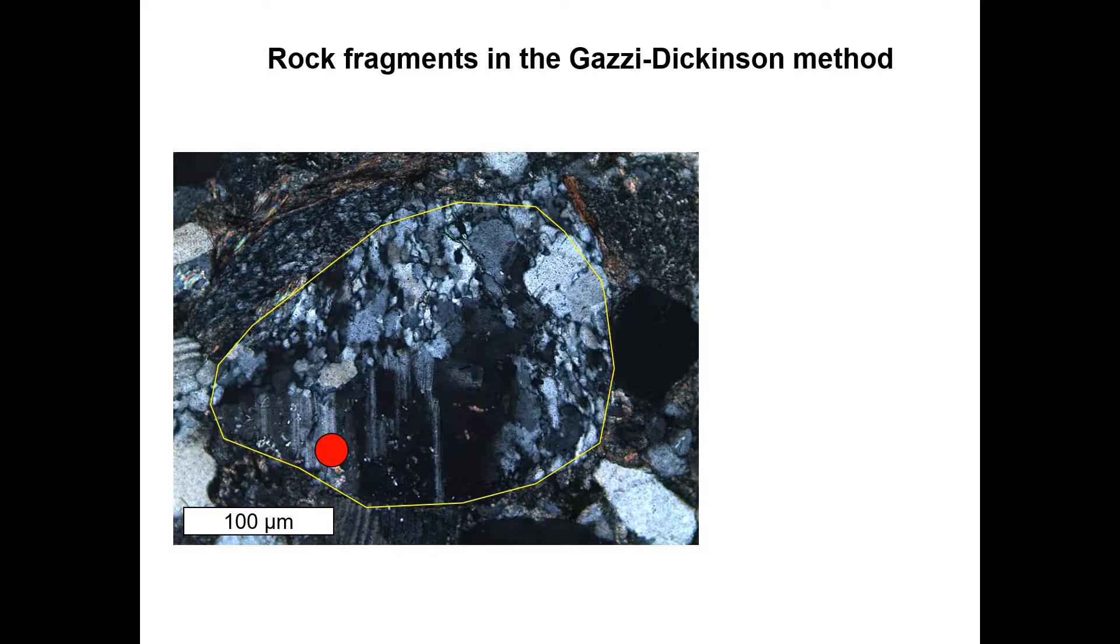Here's a real example. This is a grain consisting of quartz and feldspar. The scale here tells us that most of the individual minerals are well above our 63 micron limit, which means we have to count the individual mineral. In this case here, our crosshairs landed on the feldspar grain. So this belongs to the F-pole.